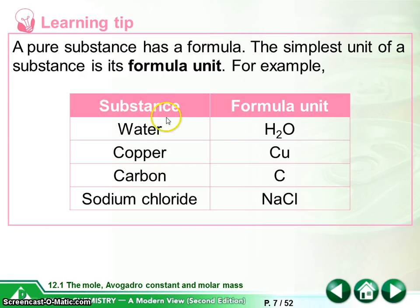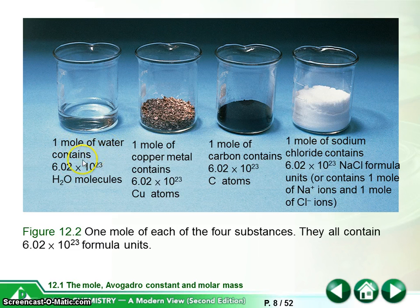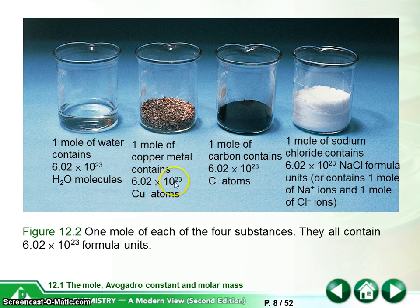So let's look at some simple content example. A pure substance has a formula. Like water, you have H2O; copper, Cu; carbon, C; sodium chloride, NaCl. So since this is the smallest formula unit in water, so we will say that in one mole of water it contains 6.02 times 10 to the power 23 H2O molecules. One mole of copper metal contains 6.02 times 10 to the power 23 Cu atoms.